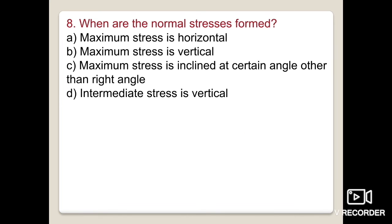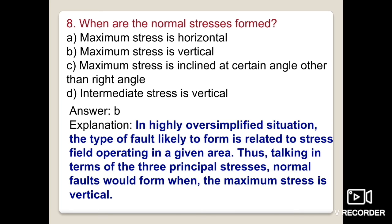The eighth question asks: when are normal faults formed? The options involve maximum stress in horizontal direction, maximum stress in vertical direction, maximum stress inclined at a certain angle, or intermediate stresses vertical. In the stress field, normal faults form when the maximum principal stress is vertical. Option B is the right answer.